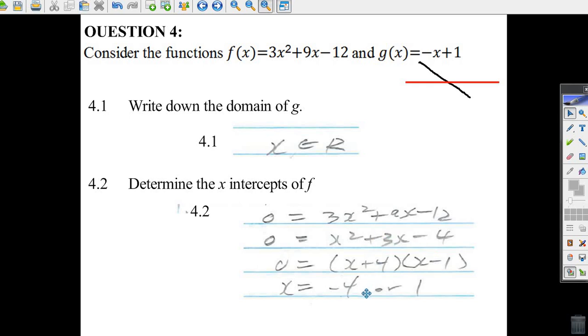So the two x-intercepts are minus 4 and 0, and 1 and 0. Minus 4 and 1 are the two x-intercepts of the parabola, the function f.